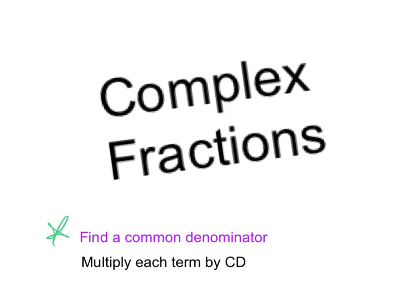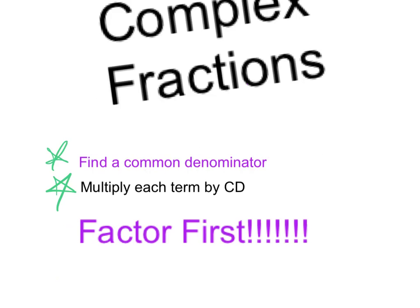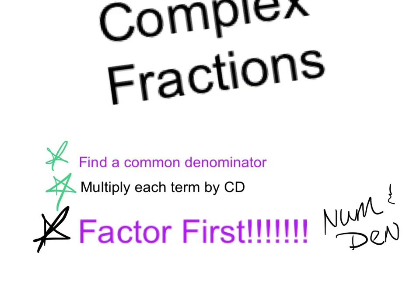Once we've figured that common denominator out, we want to multiply each term by the common denominator. Now that we've cleaned things up, our next goal is to make sure that we factor. We're not canceling a thing unless we have factored both the numerator and denominator. Then lastly, we can cancel anything on the top and bottom that's the same.